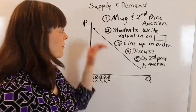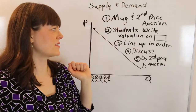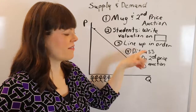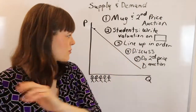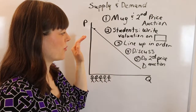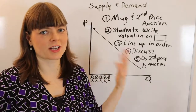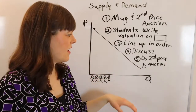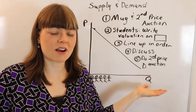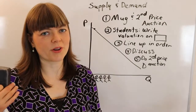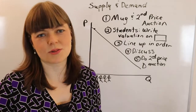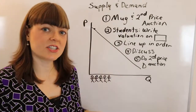Just to summarize the steps: first, you show them the product and explain the second price auction. You get students to write down their valuation on a note card, then have them line themselves up in order around the classroom. Then you discuss how they came up with their valuations. Then you sit down and draw a demand curve explaining it in relation to what they just did. Finally, you resolve the auction — either run the second price auction, give it to the highest bidder, or distribute it randomly if you're uncomfortable exchanging money.